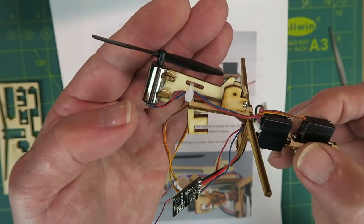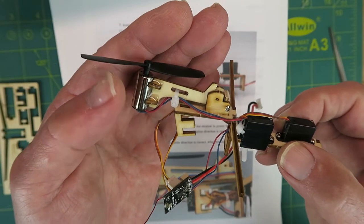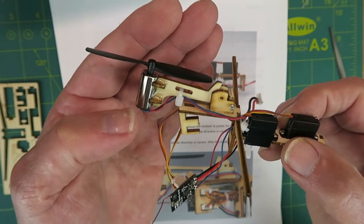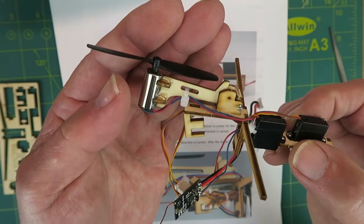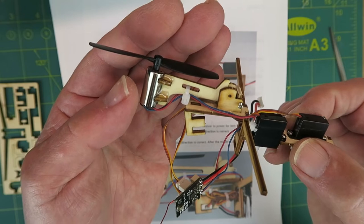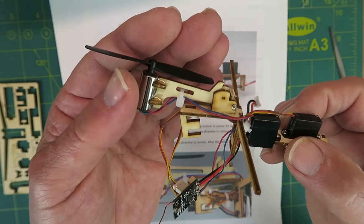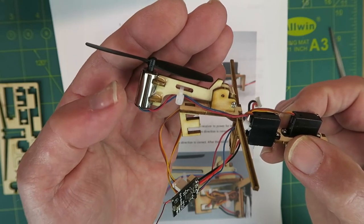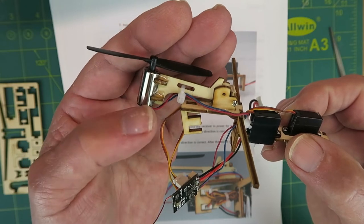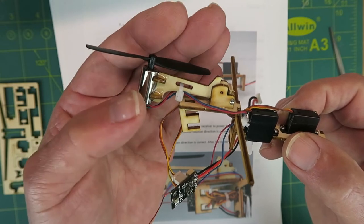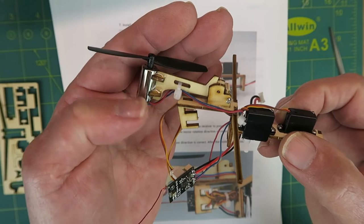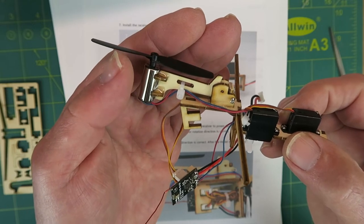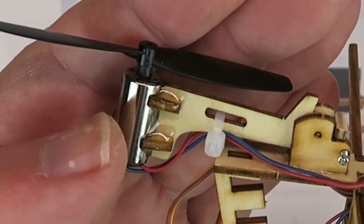I forgot to mention earlier they say to use the 502 glue to attach the motor. Now 502 is just a Chinese variant of cyanoacrylate, and I've elected to use epoxy. What I did was take my file to the bottom of the motor and rough it up a bit, and then apply the epoxy as you can see there.